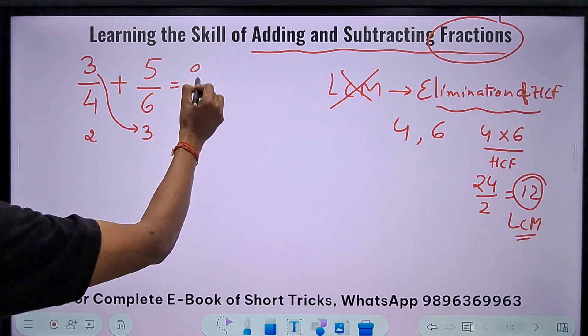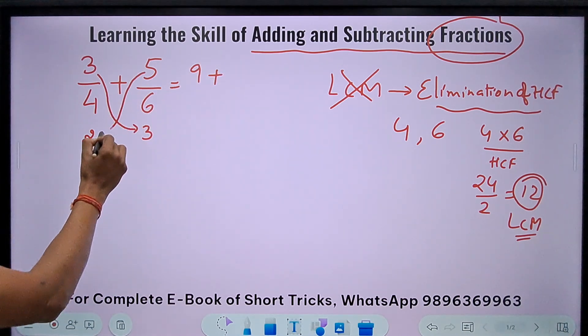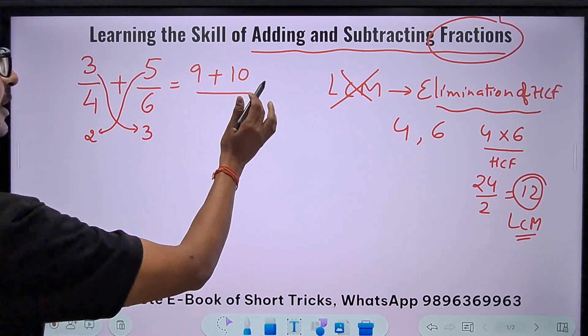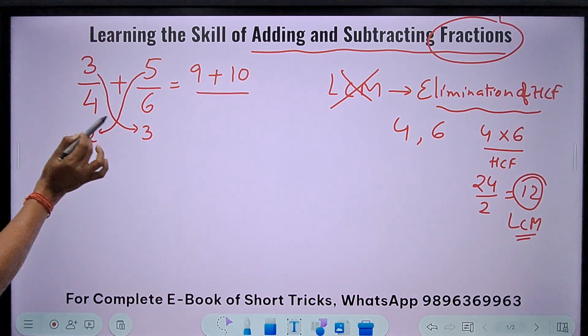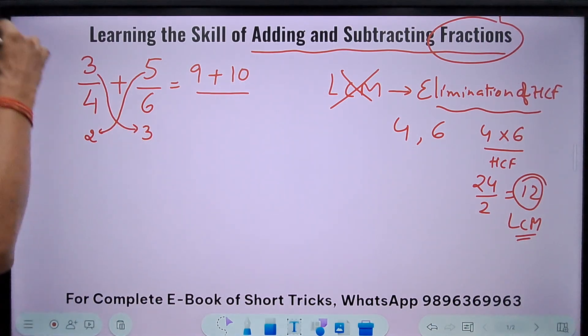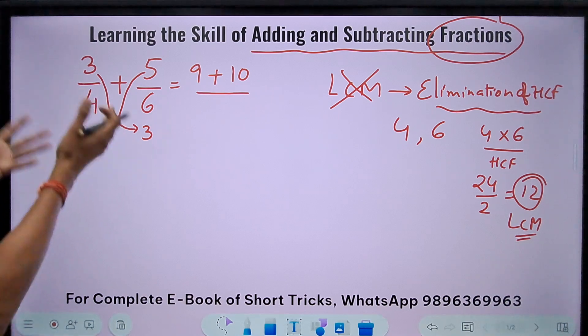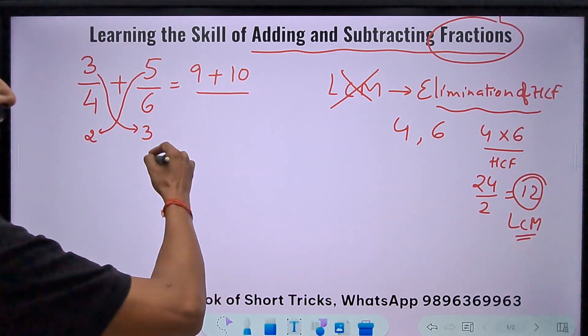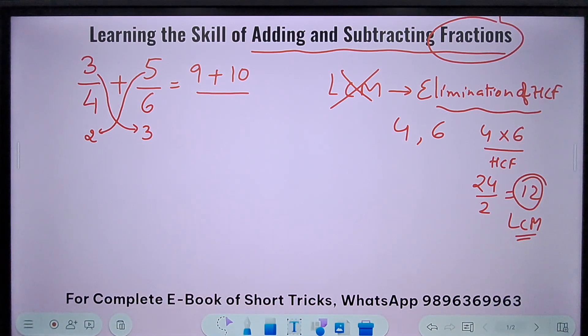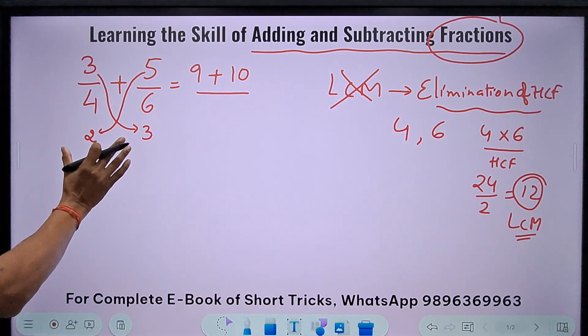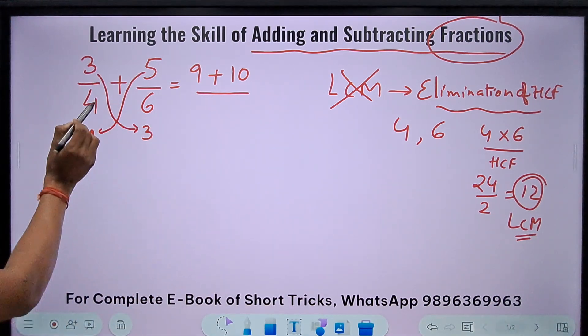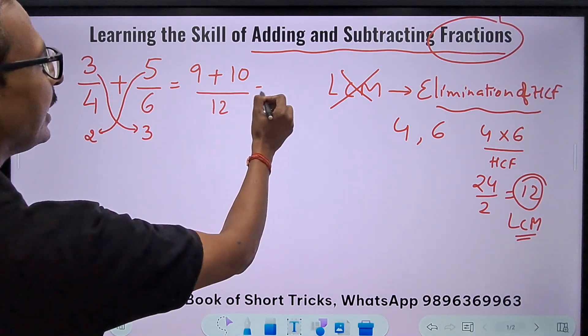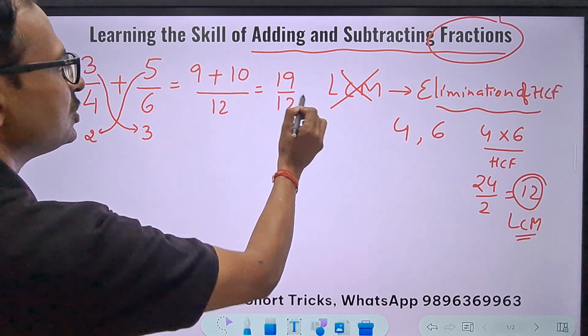And now just do the butterfly. 3 times 3 is 9 plus 5 times 2 is 10. And finally, the denominator: either do 4 times 3 or do 6 times 2. You are going to get the same answer, and that's actually the LCM which you find through the traditional method of putting the lines and making all sorts of factors. Eliminating the HCF gives you the LCM directly. 4 times 3 is 12, 6 times 2 is 12. So just write 12 here and get your answer: 19/12.